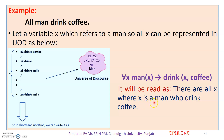The logical representation reads: 'for all x, where x is a man, x drinks coffee.' Here, 'is a man' is the predicate, the connective used is implication, 'drink(x, coffee)' is another predicate, and x and coffee are the terms.